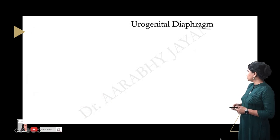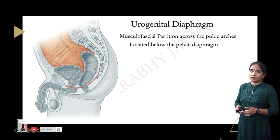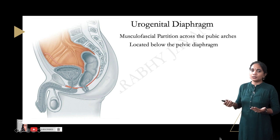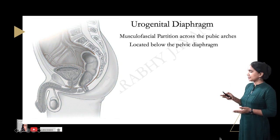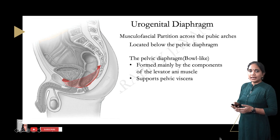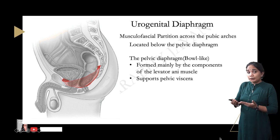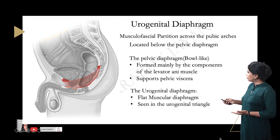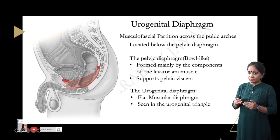The urogenital diaphragm is a musculofascial partition across the pubic arches, located below the pelvic diaphragm. The pelvic diaphragm is a bowl-like arrangement of muscles — mainly the levator ani and its components — that supports the entire pelvic viscera. Below the pelvic diaphragm is the urogenital diaphragm, which is a flat muscular diaphragm seen in the region of the urogenital triangle.